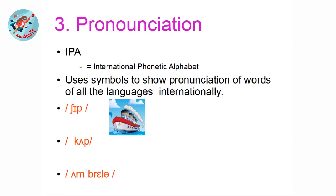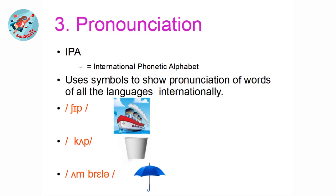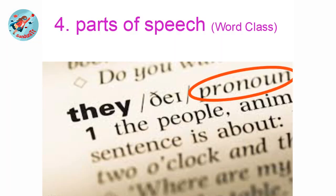Now look at these example words for pronunciation. The first word is 'ship'. The second word is 'cock'. Can you guess what the third word is? Umbrella — umbrella. These words are represented in IPA — the International Phonetic Alphabet. Our next topic is Parts of Speech or Word Class.